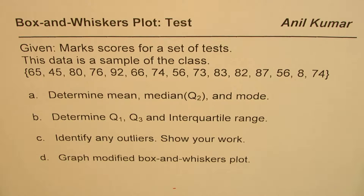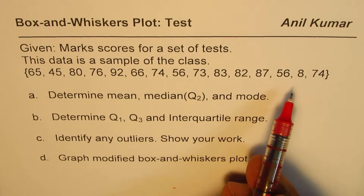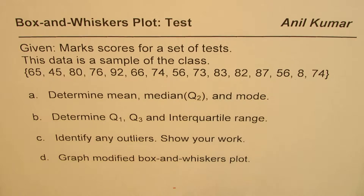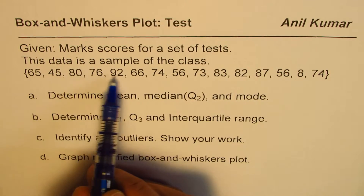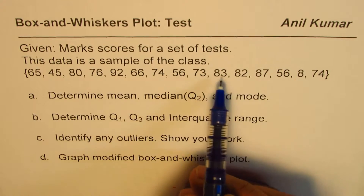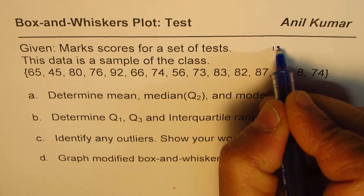This is raw data given to us in mixed form. The first step should be to arrange the data in increasing or decreasing order. Let's count the numbers: one, two, three, four, five, six, seven, eight, nine, ten, eleven, twelve, thirteen, fourteen, fifteen — so we have fifteen numbers in all.